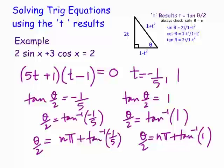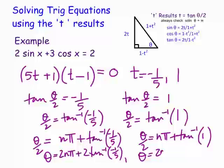Doubling gives us: θ = 2nπ + 2·arctan(−1/5), and also θ = 2nπ + 2·arctan(1). So we have two streams feeding into the solutions to this particular trig equation from the t-results.